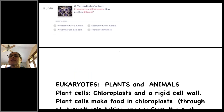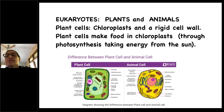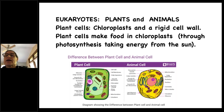Today our focus is on eukaryotes — plants and animals. There's a nice diagram of both cells. Plant cells have chloroplasts and a rigid cell wall. Plant cells make food in chloroplasts — those little green Easter egg-looking things with zigzags — through photosynthesis, taking energy from the sun. The cell wall keeps the plant cell's structure rectangular. A plant cell is three-dimensional, like a cube, while an animal cell is like a sphere.